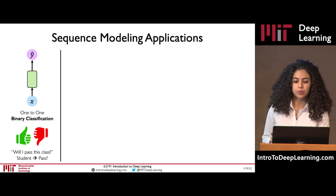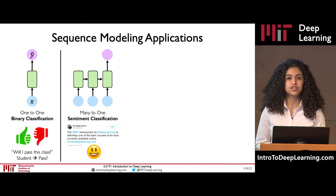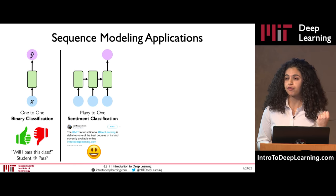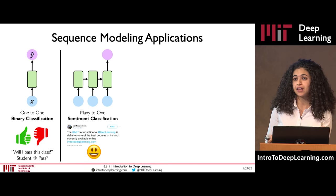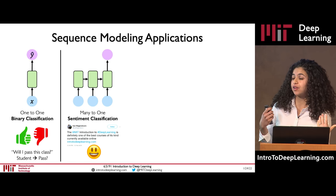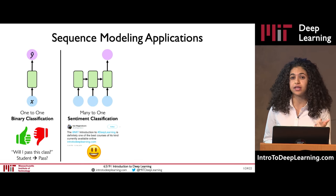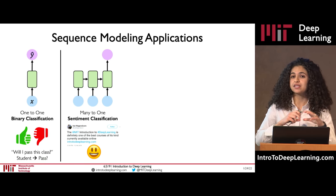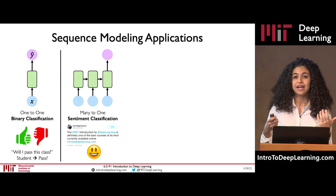In contrast with sequence modeling, we can now handle a vast variety of different types of problems where we have a sequence of temporal inputs and potentially a sequential output. For example, a natural language processing task where we have a tweet and we want to classify the emotion or sentiment associated with that tweet — mapping a sequence of words to a positive or negative label.